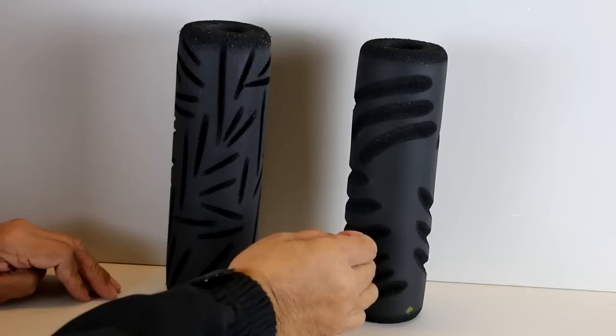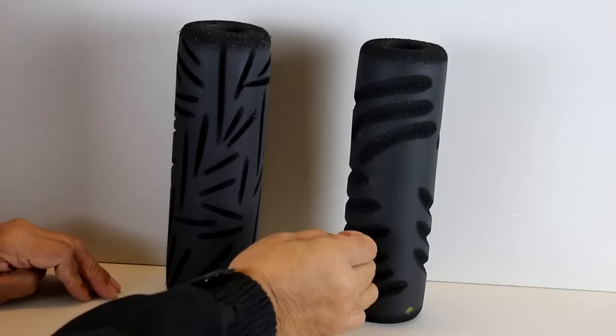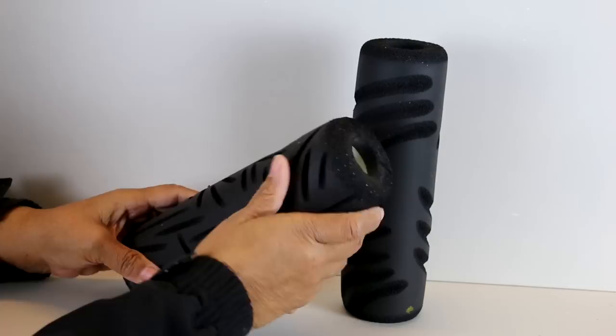So what we're going to use to cover up that orange peel pattern are texture rollers, and that's what these are. Now, I've done videos before where I've shown how to use a texture roller,